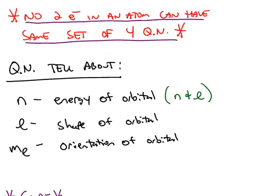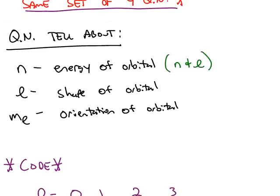The quantum numbers tell you about the orbitals, and the orbitals are the location of electrons. The quantum number n tells you most importantly about the energy of the orbital, and it turns out energy is also dependent on l. The most important thing l tells you, though, is the shape of the orbital. And the quantum number m sub l tells you about the orientation in three-dimensional space of that orbital.